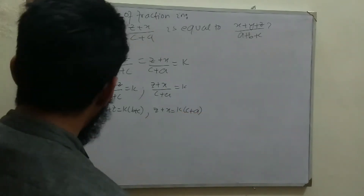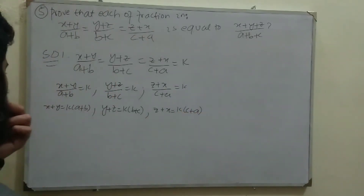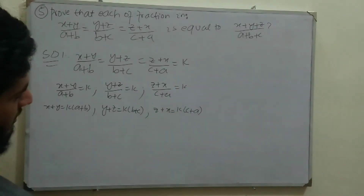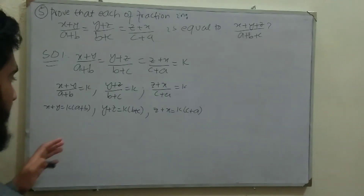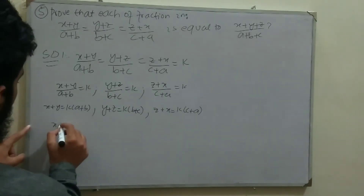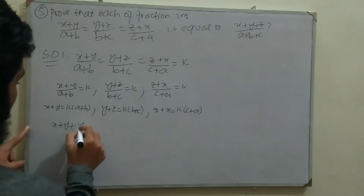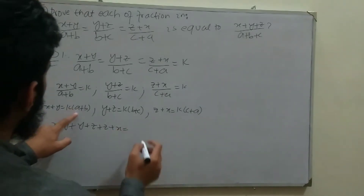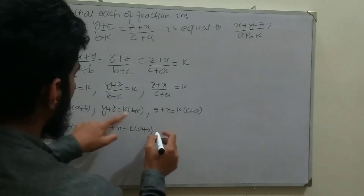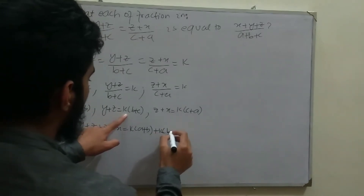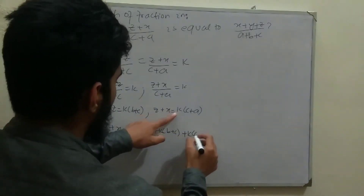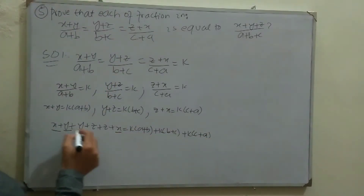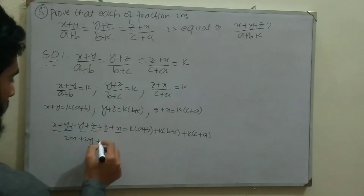Using the rule of mathematics that what we do on the left side we do on the right side: adding all three left-hand sides gives (x+y)+(y+z)+(z+x), and adding the right-hand sides gives k(a+b) + k(b+c) + k(c+a). The left side simplifies to 2x+2y+2z.